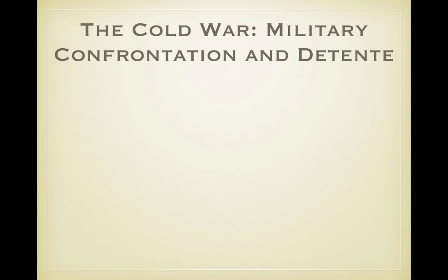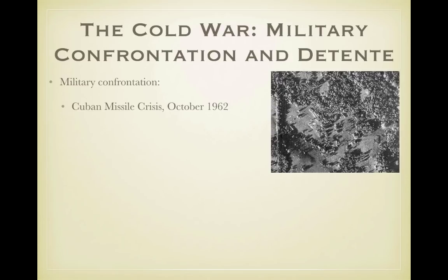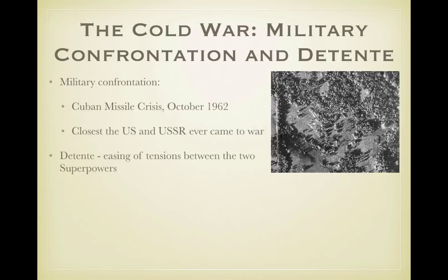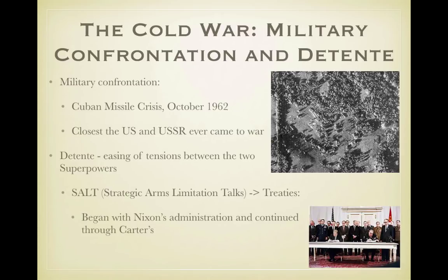Throughout the Cold War, we're going to see a shift between military confrontation and détente. In October of 1962, the Cuban Missile Crisis occurred — the U.S. discovered nuclear weapons in Cuba, just 90 miles off the shore of Florida. For 13 days, this was the closest the U.S. and USSR ever came to war. Fortunately, the Soviet Union agreed to withdraw the missiles. Détente is the easing of tensions between the two superpowers — a thawing of the Cold War — seen in treaties such as SALT, the Strategic Arms Limitation Talks, which began with Nixon's administration and continued through Carter's.